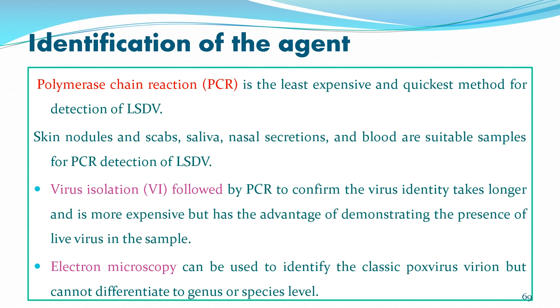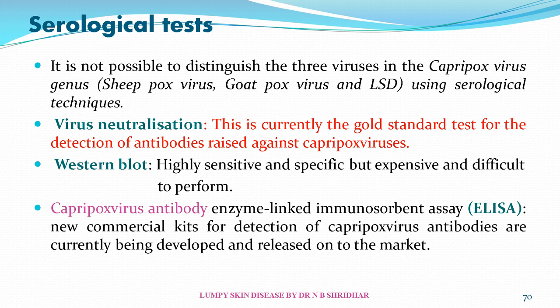Electron microscopy can identify classic pox virus morphology but cannot differentiate at genus or species level. Serologically, it is not possible to distinguish capripox virus, sheep pox virus, goat pox virus, and lumpy skin disease virus. The virus neutralization test is currently the gold standard for detection of antibodies against capripox virus. Western blot is highly sensitive and specific but expensive. Capripox virus antibody ELISA — new commercial kits — are currently being developed and released to market.